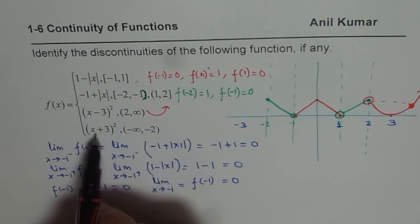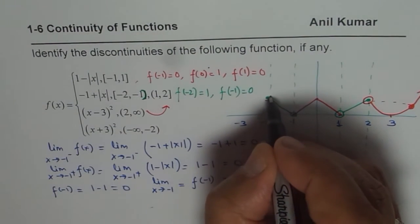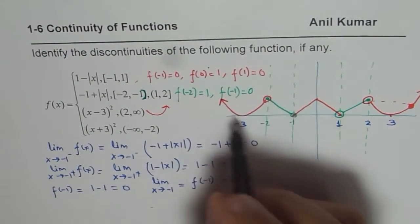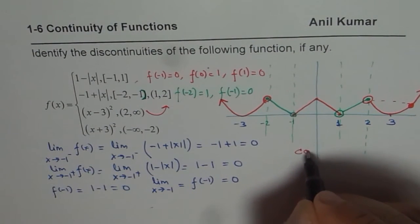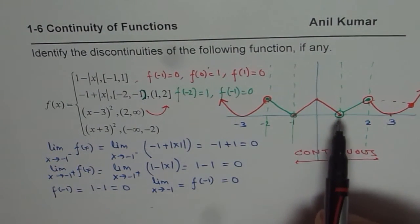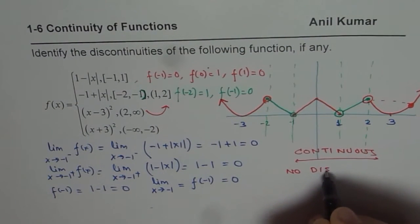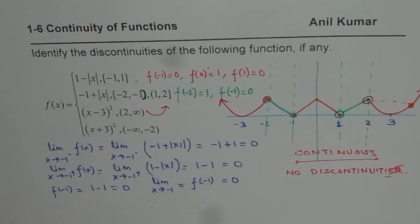For the last piece, x plus 3 whole square for x less than minus 2: substituting minus 2 gives minus 2 plus 3 squared, which is 1, so there is an open hole at that value. At minus 3, we get 0. So we get a parabola drawn on this side. Clearly from this diagram, all the open holes match with the filled end circles. Therefore the function is continuous in its entire domain — all the open circles overlap with closed circles, so there are no discontinuities.